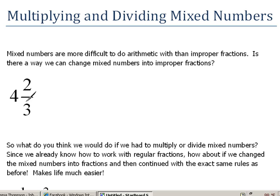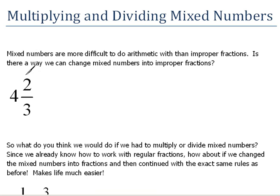In order to change this mixed number into a fraction, remember, we have to multiply and then add, kind of as we're going diagonally up. So, 4 times 3 would be 12, plus 2 would be 14. So, that would be 14 over, we keep the denominator of 3. So, this is changing that into an improper fraction.